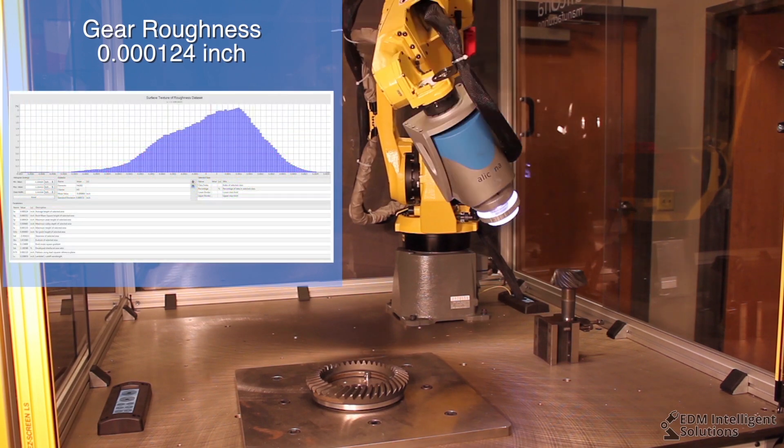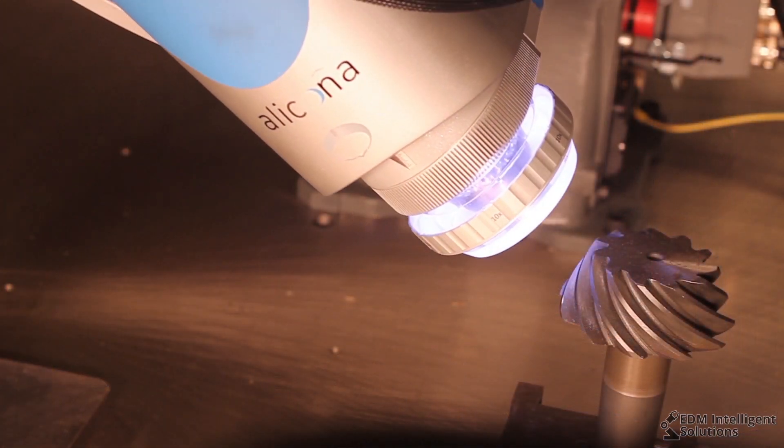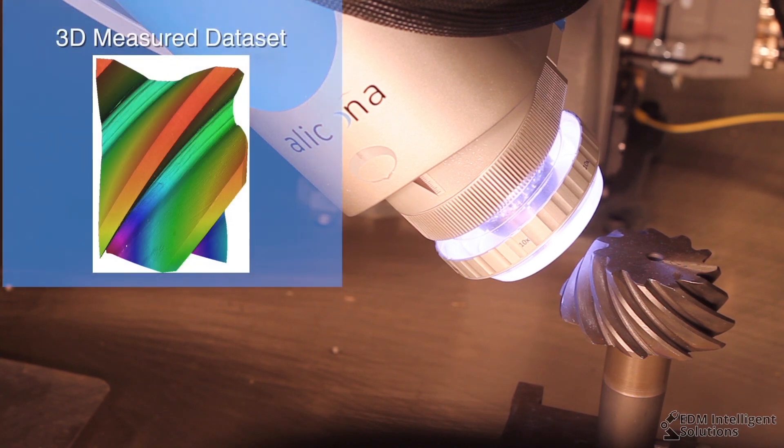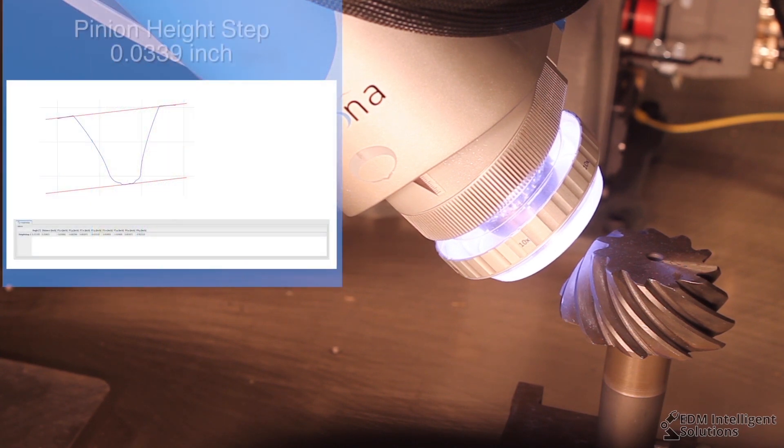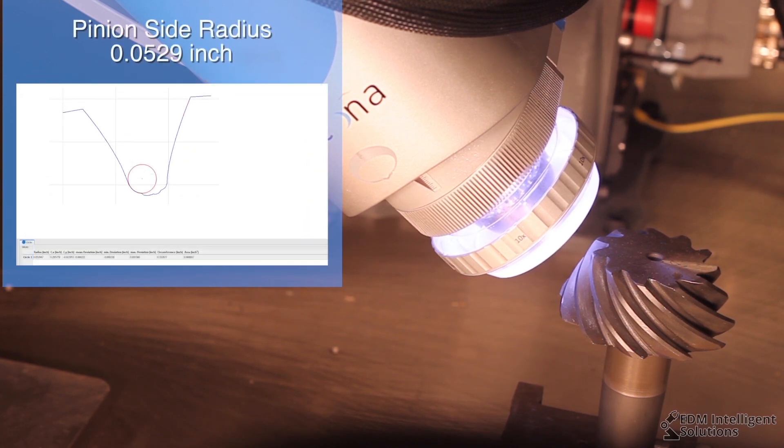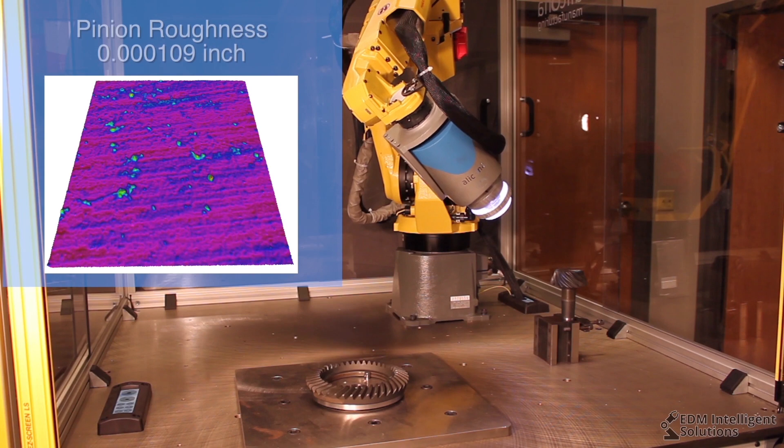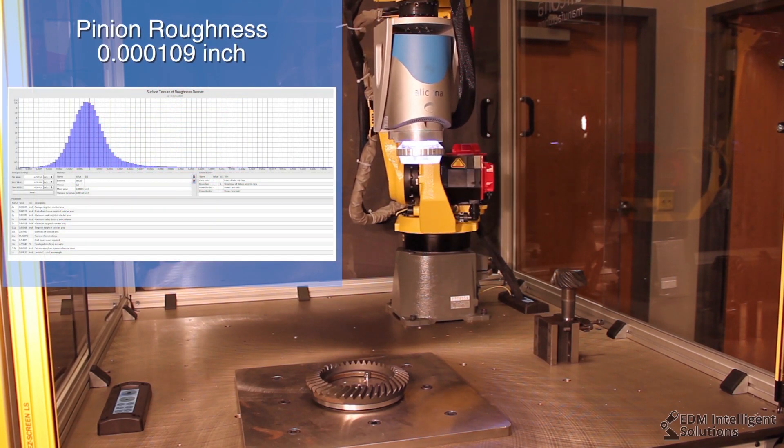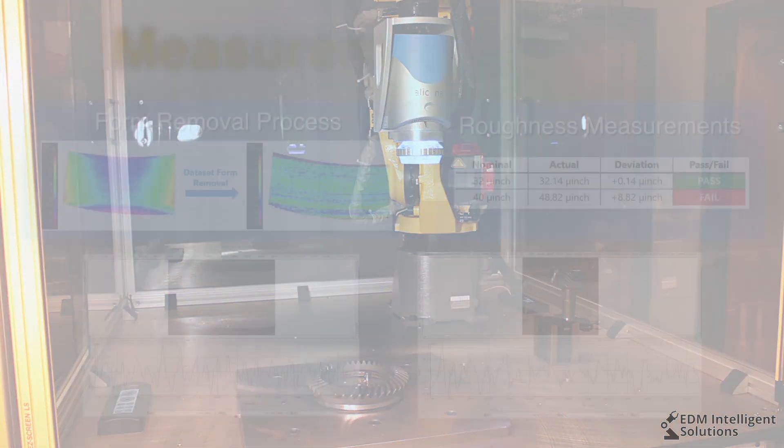The robot used for the inspection process is FANUC's compact M10IA-12S short-arm robot. This FANUC robot holds a high-resolution 3D optical sensor while the sensor performs scanning and capture of 3D measurement datasets based on part ID.